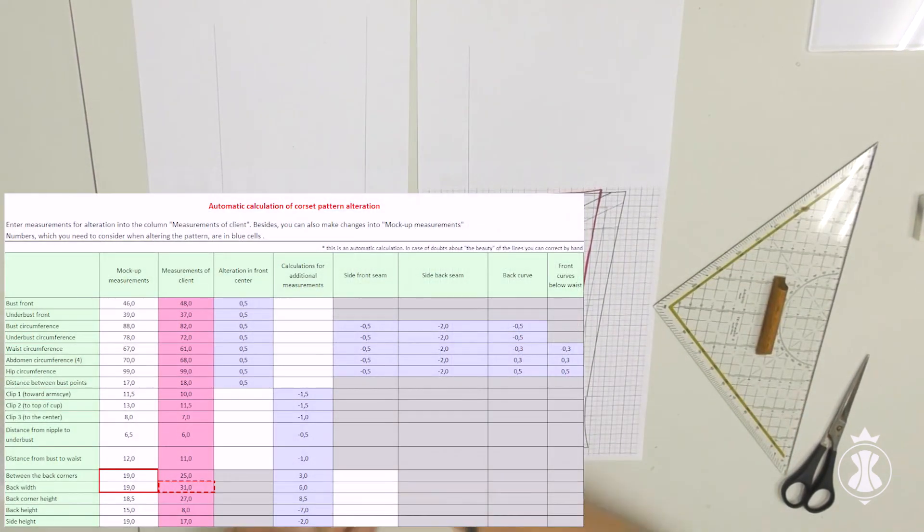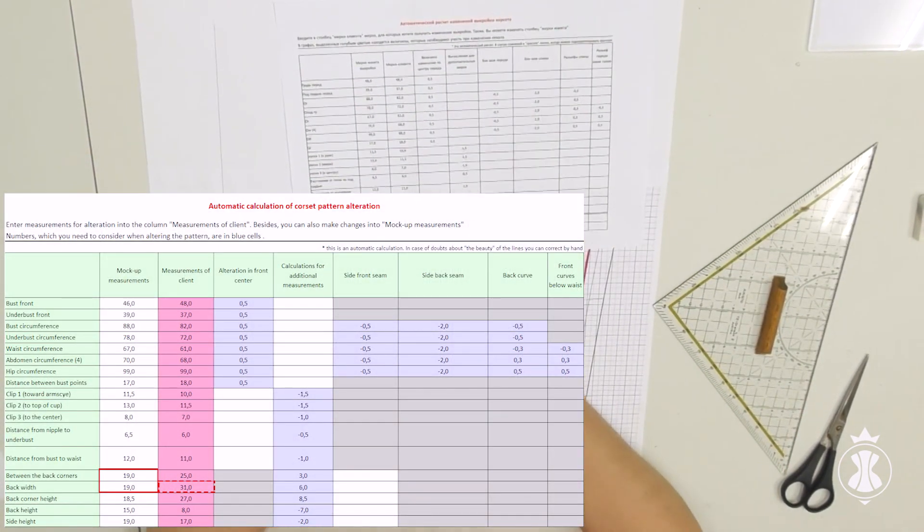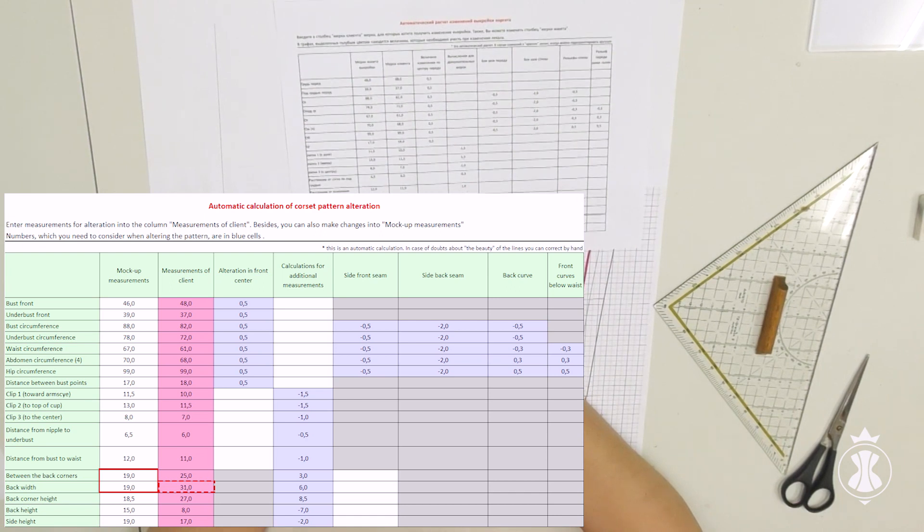On the sides of the waistline, I draw a parallel to the waistline. Some words about the initial measurements in the table. You see that the initial measurements in between back corners and back width are equal and comprise 19 cm. So, the question pops up about the 19 cm.